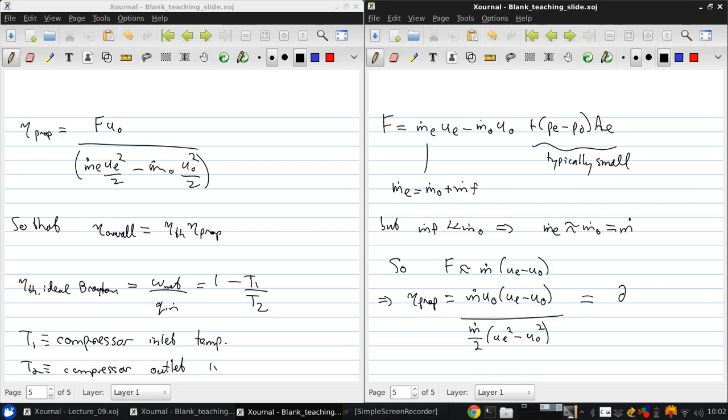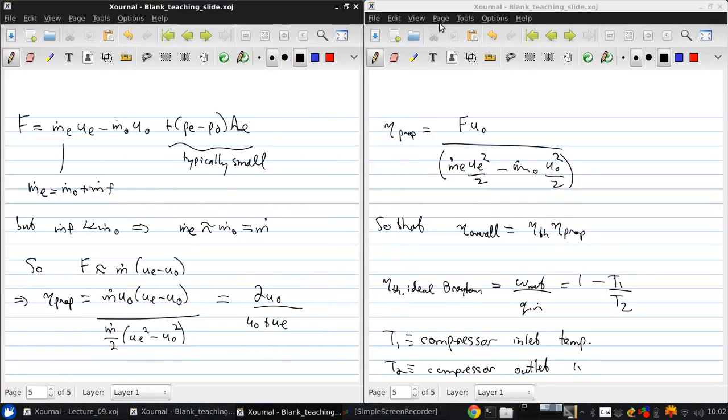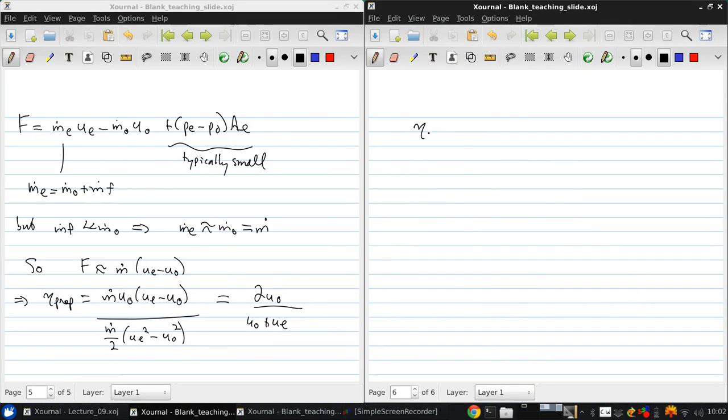And this can be simplified to 2 u0 over u0 plus ue, so that we get a very simple expression for the propulsive efficiency, or at least the approximate propulsive efficiency, which is 2 over 1 plus ue over u0.